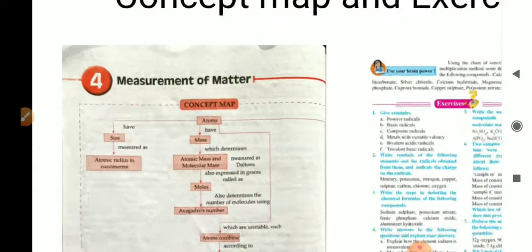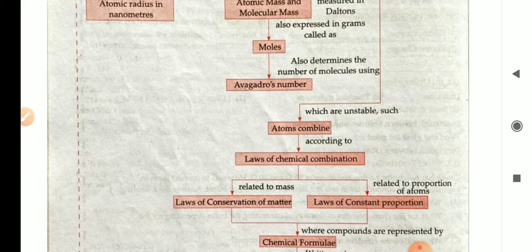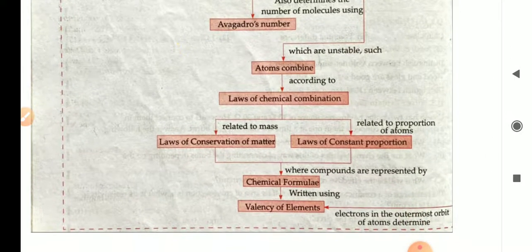Let us see the concept map. Atoms have size measured as atomic radius in nanometers. Atoms have mass which determines atomic mass and molecular mass, measured in Daltons, and when expressed in grams is called moles. Mass also determines the number of molecules using Avogadro's number. Unstable atoms combine according to the laws of chemical combination — related to mass via conservation of matter and laws of constant proportion. Compounds are represented by chemical formulae written using the valency of elements, which is determined by the electrons in the outermost orbit.